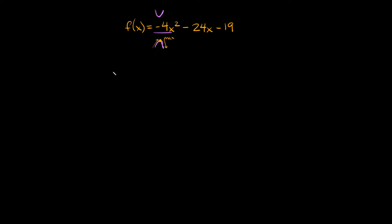In order to do that there are two things we have to do. First we have to find the axis of symmetry, which is just a vertical line that runs through the vertex. To find the axis of symmetry, you just use this formula: x is equal to negative b over 2a. You pull the numbers a and b off of your function — the first number is a, the second number is b, and the last number is c.